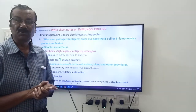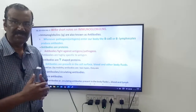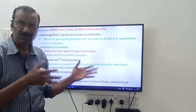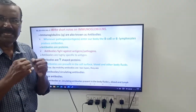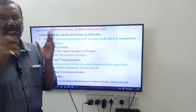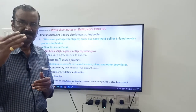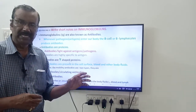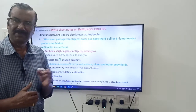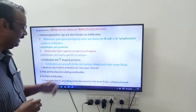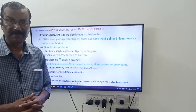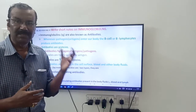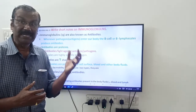Antibodies are classified into two types based on their mobility — that is, based on their movement. The first type is free antibodies or circulating antibodies. These antibodies can move in the body fluids.